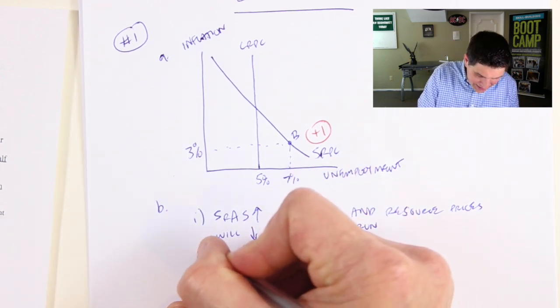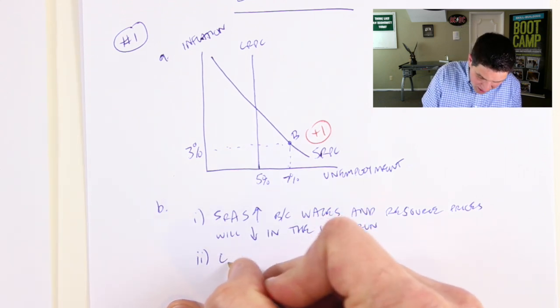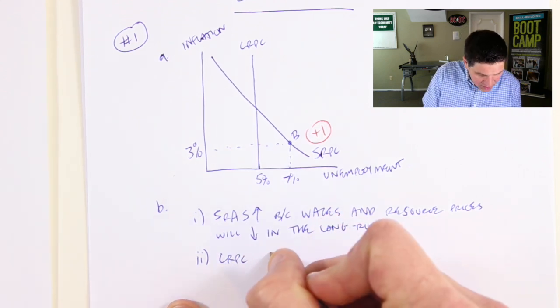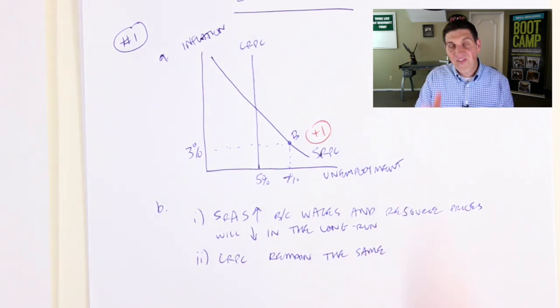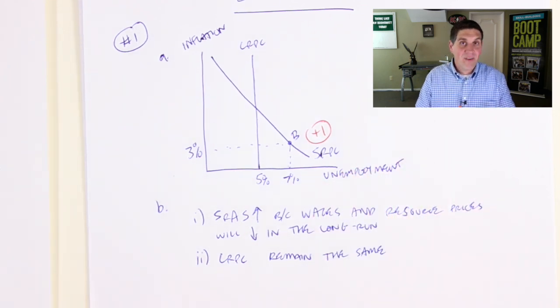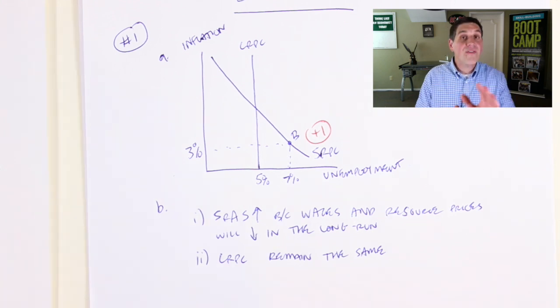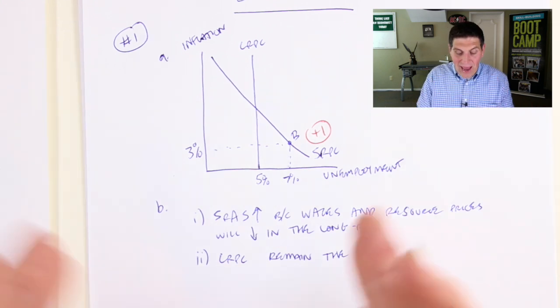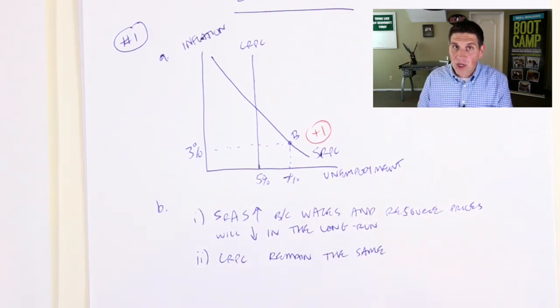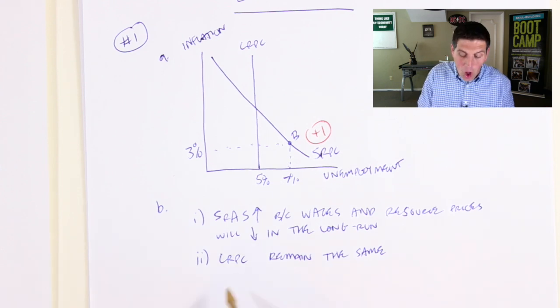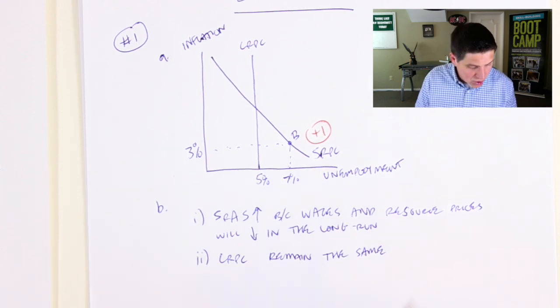Now, in question B2, it says what will happen to the long run Phillips curve? The long run Phillips curve will stay the same. The natural rate of unemployment is going to stay at 5%. It doesn't matter if the government just waits it out, or if they use fiscal policy or monetary policy, the natural rate of unemployment is still going to stay at 5%. That's how much frictional and structural employment we're going to have. So the natural rate of unemployment doesn't change. So the long run Phillips curve is also not going to change.